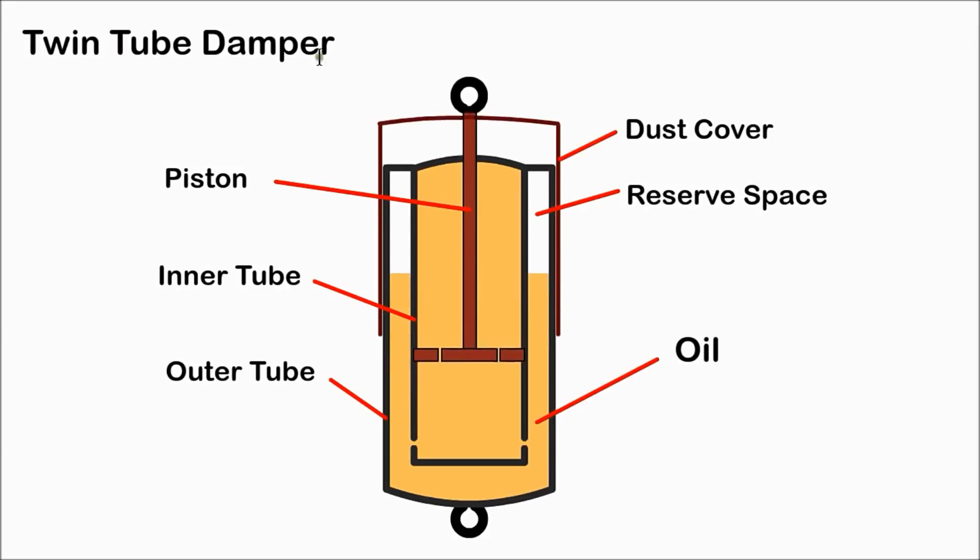A twin tube damper has an inner and outer tube. The piston moves in the inner tube and hydraulic fluid is displaced to the outer tube. The restricted flow through the orifice slows down and controls the movement of the piston. Compressed air or nitrogen allows for the additional volume taken by the piston rod as it enters the cylinder.